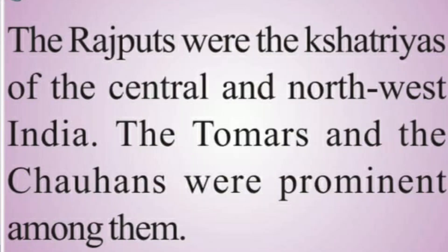And then the seat of power for Delhi. It was under the Tomar kings — the Tomar Rajputs — who came first into rule. The Tomars were Rajputs, and Rajputs were the Kshatriyas of Central and Northwest India. The Tomars and the Chauhans were prominent among them. The Tomar kings came into power in Delhi in the 8th century. At that time, Delhi was known as Dilika.